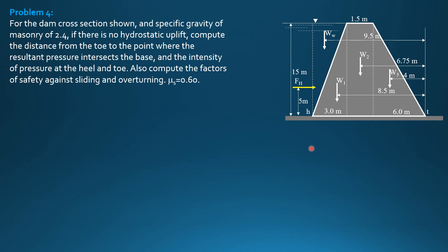So FH, specific weight of water times H, 15 over 2, area 1 meter by 15. So FH is equal to 1103.625 kilonewtons.